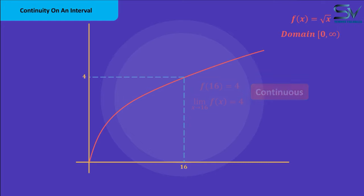Similarly, if we consider any point x equals c, where c can be any number greater than 0. Then, at this point, the value of the function f of c and the limit will be equal. This means that it will be continuous at each point c. We can check the continuity of an interval in this manner.